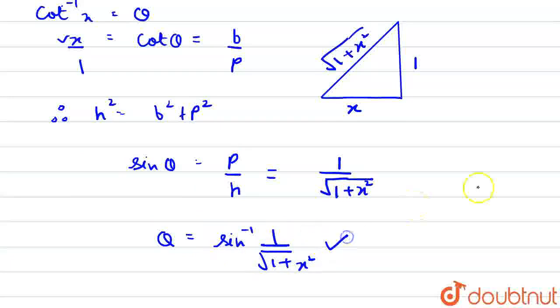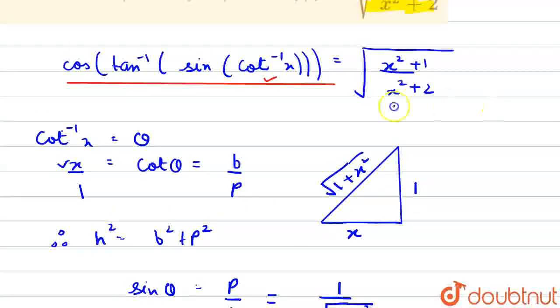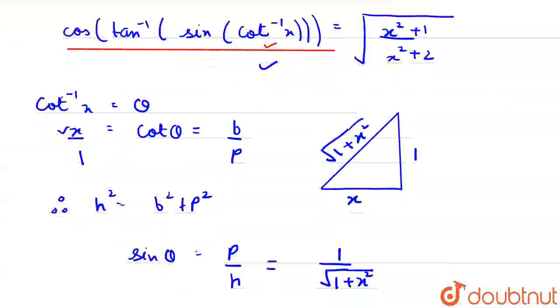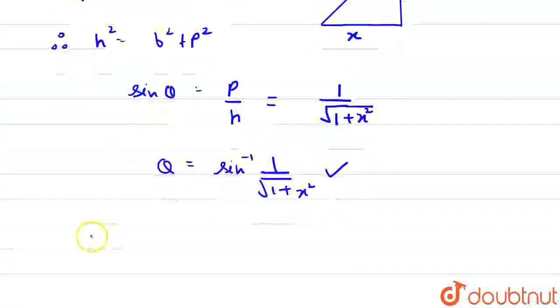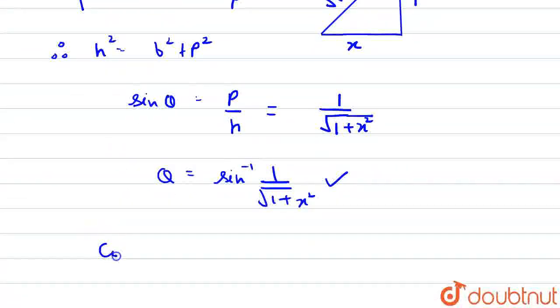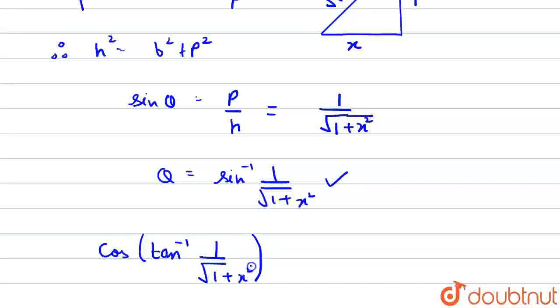So, we will put this in place of cot inverse x. And we will finally get cos of tan inverse 1 upon root of 1 plus x squared.